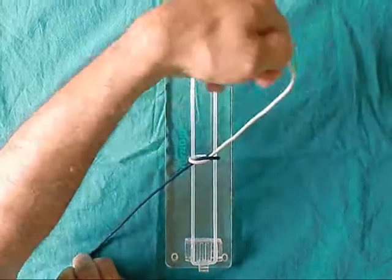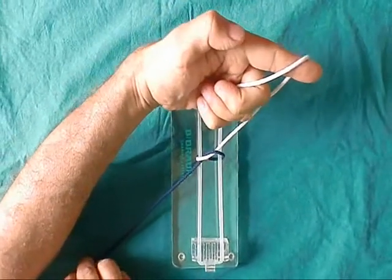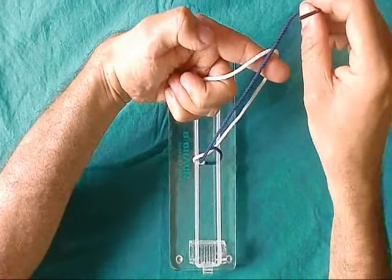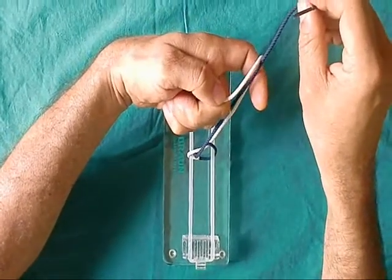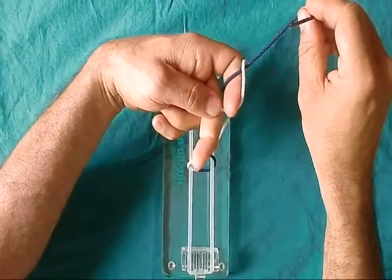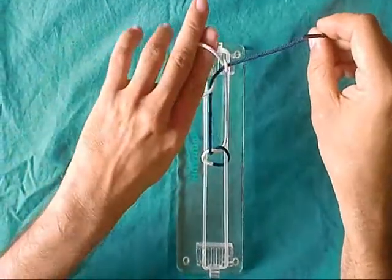Change the grip to a pistol grip of the left hand. Bring the black thread over the index finger. Make a loop of the index finger.